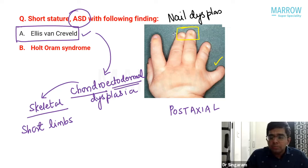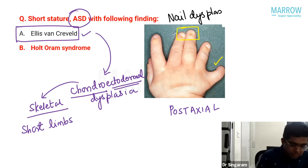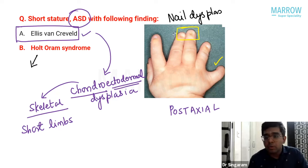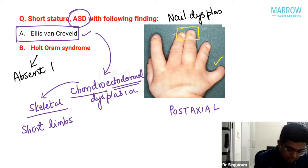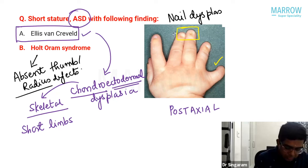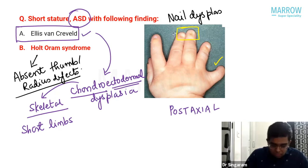Holt-Oram syndrome can also present with short stature and ASD but is associated with limb defects such as absent thumb or radial defects — not polydactyly. Since the picture showed post-axial polydactyly and nail dysplasia (ectodermal feature), the answer is Ellis-van Creveld syndrome, not Holt-Oram syndrome.